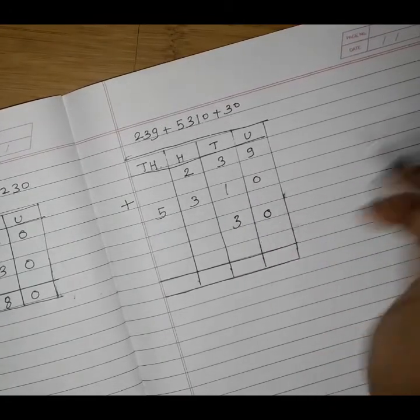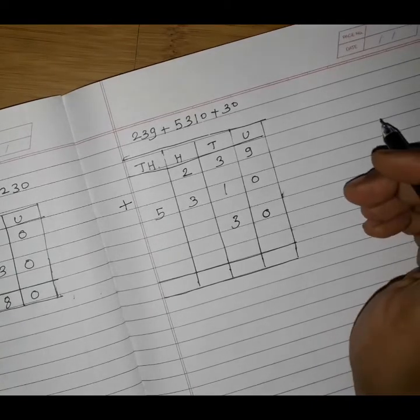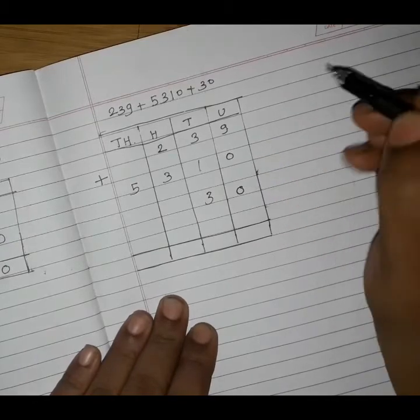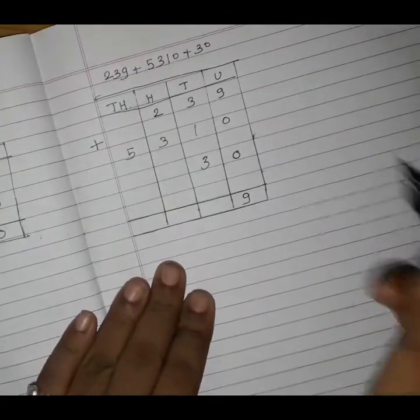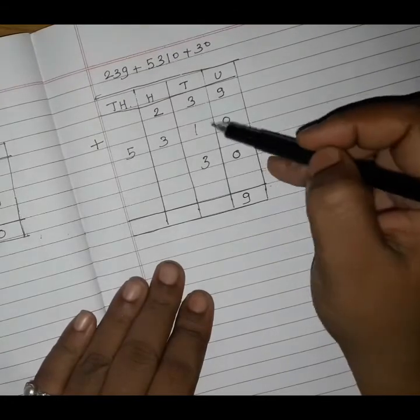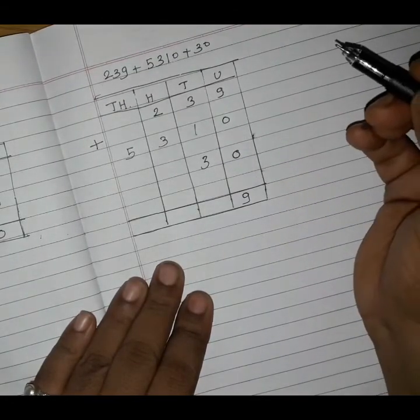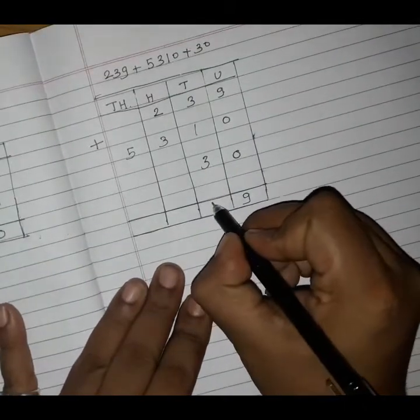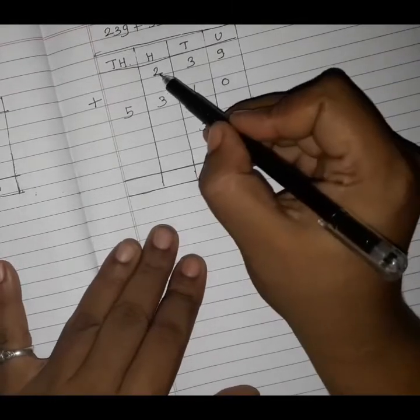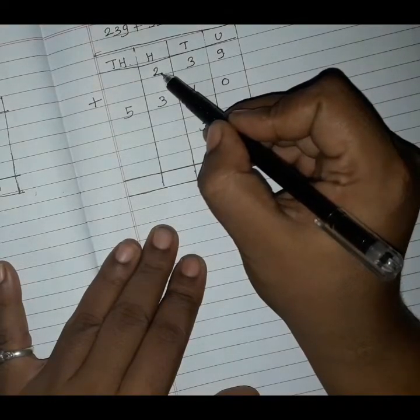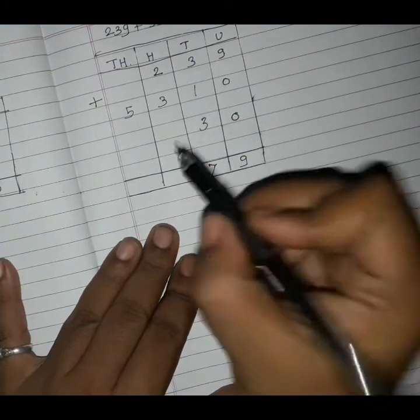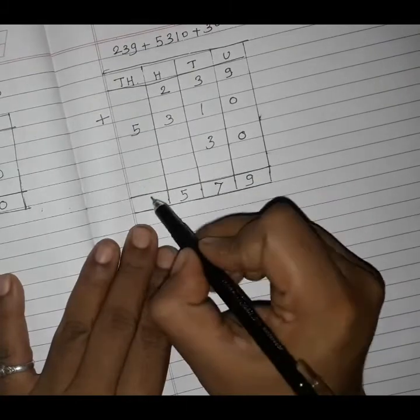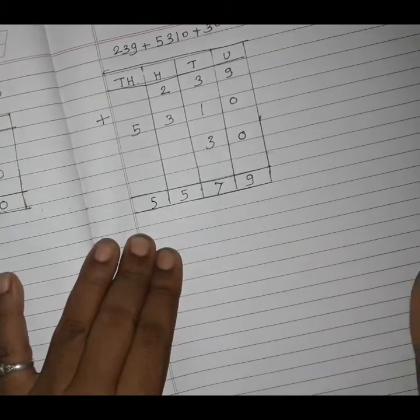Now add: 9 plus 0 plus 0 equals 9. 3 plus 1 plus 3: 3 plus 1 is 4, and 4 plus 3 equals 7 at the tens place. At hundreds place there is 2 and 3: 2 plus 3 equals 5.